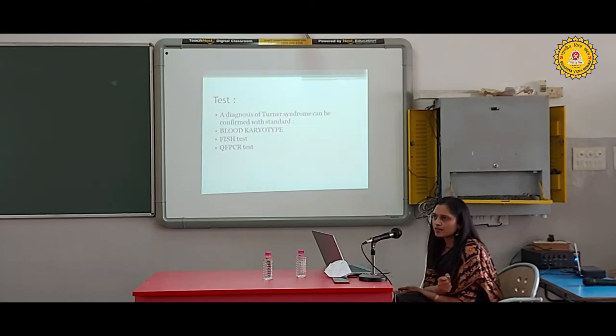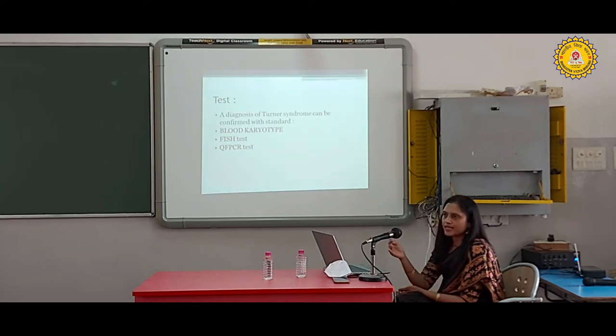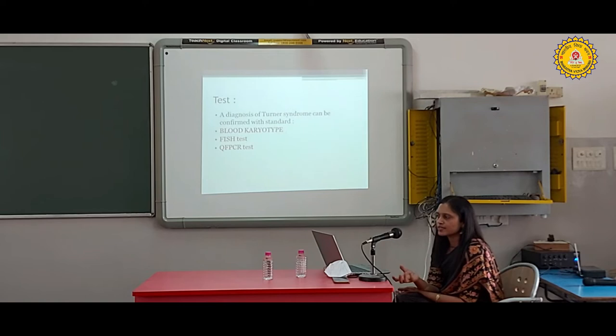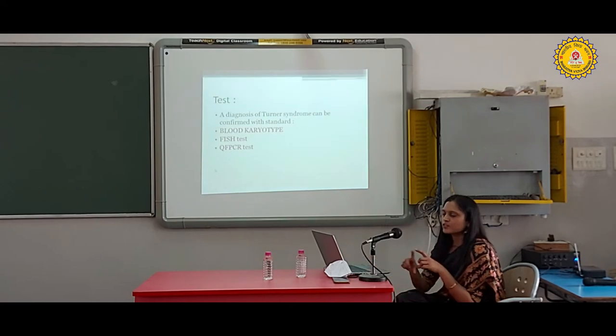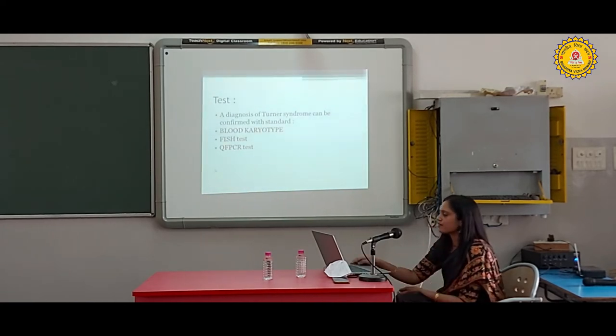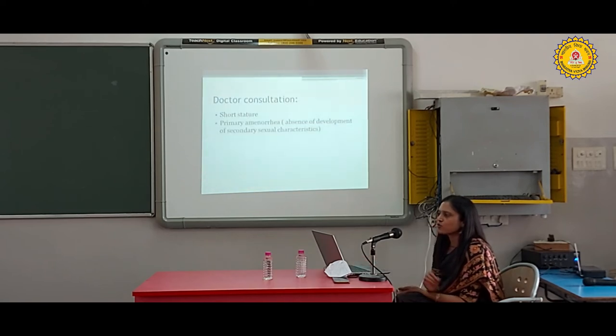How we diagnose Turner syndrome: First, we suspect Turner syndrome and send for investigation. The most common investigation is blood karyotype, which takes 2 to 3 weeks for results. Other tests like FISH or PCR give results in 2 to 3 days, showing whether she has normal female karyotype or is lacking one X chromosome with 45X.